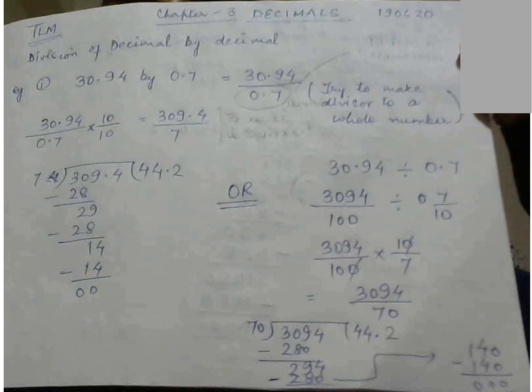Earlier we have studied how to divide a decimal by 10, 100 or 1000 and we have also seen how to divide decimal by whole number. Today it is decimal by decimal.